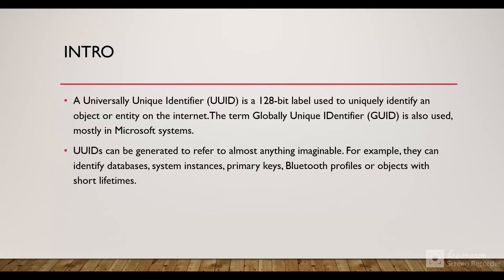A UUID is a 128-bit label used to uniquely identify an object or entity on the internet. The term GUID is also used in place of UUID, mostly in Microsoft systems. UUIDs can be generated to refer to almost anything imaginable — for example, they can identify databases, system instances, primary keys, Bluetooth profiles, etc.